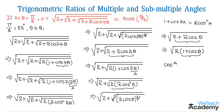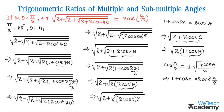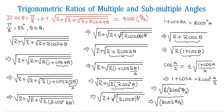This is in the form of 1 + cos a. Using the sub-multiple angle formula — cos(a/2) = ±√((1 + cosa)/2) — we derive that 1 + cosa = 2cos²(a/2). Applying this gives √(2·2cos²(θ/2)), which equals √((2cos(θ/2))²). The square and square root cancel, leaving 2cos(θ/2).